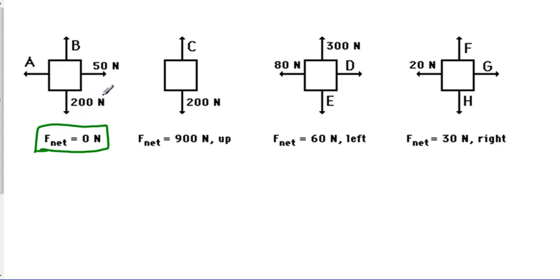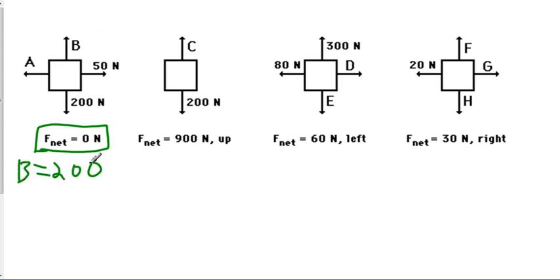With a gravitational force of 200 newtons and a net force of 0, we know that the normal force B is also 200 newtons. And since we have 50 newtons applied to the right with a net force of 0, we know that vector A is also 50 newtons in the opposite direction.